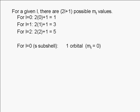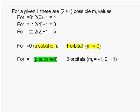What this means is that we can define an s subshell as a set consisting of only 1 orbital. We can say that s orbitals come in sets of 1. We can define a p subshell as a set of 3 orbitals. We can say that p orbitals come in sets of 3.